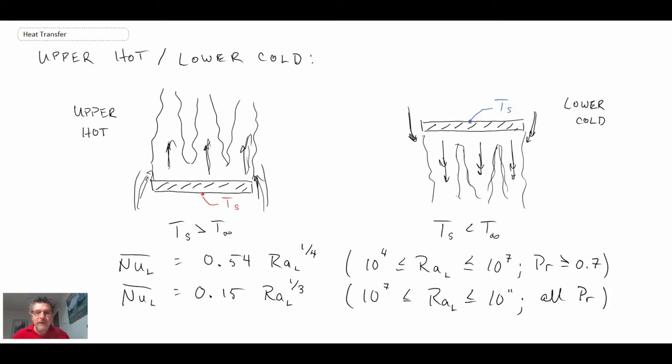There we have our two different correlations. The first one has the Rayleigh number raised to the power of one quarter. When we were looking at correlations, we said that would be an indication of laminar flow. Although the Rayleigh number is not 10 to the 9 like we saw before, it's a little lower, but still that would be an indication of more of a laminar-like flow. As the Rayleigh number increases, the exponent on the Rayleigh number goes to one third, which could be considered as being more of a turbulent type regime for the flow. That is the case of upper hot, lower cold.